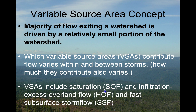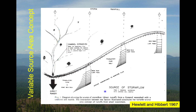Variable source areas can include saturation overland flow, infiltration excess or Hortonian overland flow, and fast subsurface storm flow. This concept came out of work in the Southern Appalachians in the 1960s by Hewlett and Hibbert. Their classic illustration shows arrows representing flow down the hillslope, where the length of the arrows increases moving down the hillslope, indicating greater flux of water in the lower part and greater depth in the soil profile, while the upper part of the soil profile is dominated by vertical rather than lateral flow.